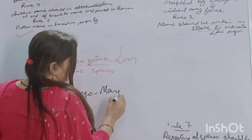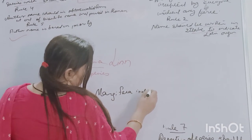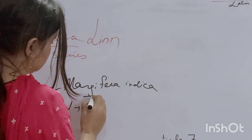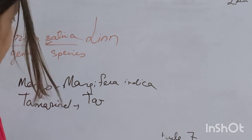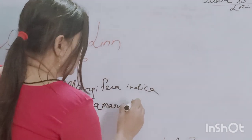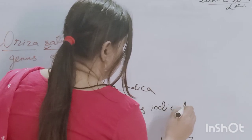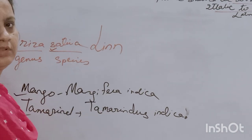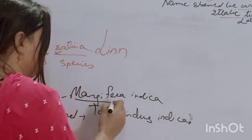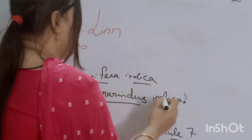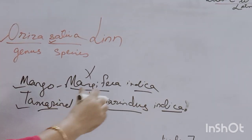For example, mango and tamarind are two plants. Mango has the generic name Mangifera, and tamarind has the generic name Tamarindus — so their generic names are different. But the species name can be the same. Rule six states that the generic name cannot be the same, but the species name can be.